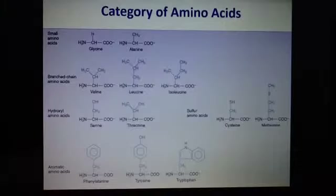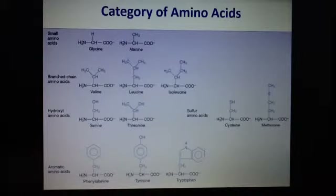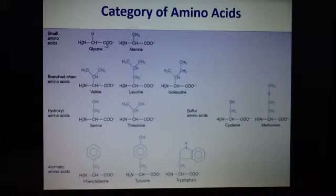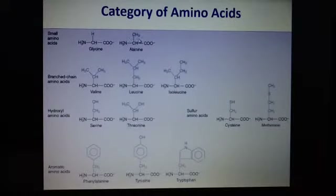We're going to talk about categories of amino acids from the very basic to the more complex. Let's start by looking at the small amino acids — they have a very basic form. Notice that the differences in the R groups result in changes in the amino acids, making them become different amino acids.